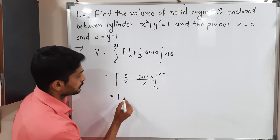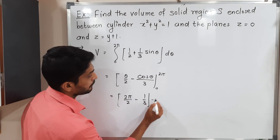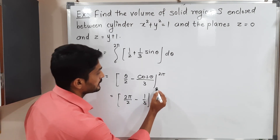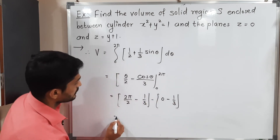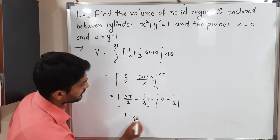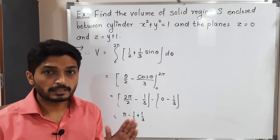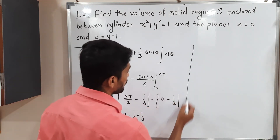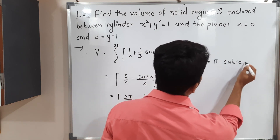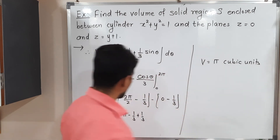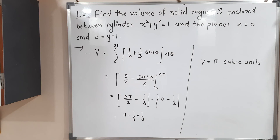Integration of sinθ is −cosθ, so we get −cosθ/3. Evaluating from 0 to 2π: putting in 2π gives 2π/2 − (1/3)cos2π = π − 1/3; putting in 0 gives 0 − (1/3)cos0 = −1/3. So the result is [π − 1/3] − [−1/3] = π. Therefore, the required volume V = π cubic units.